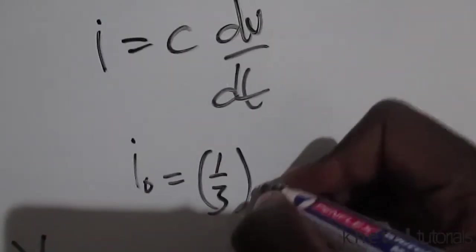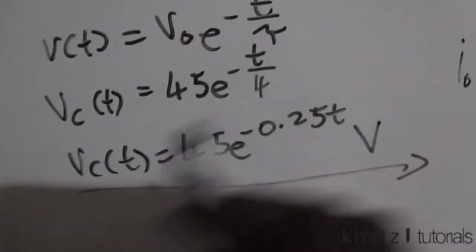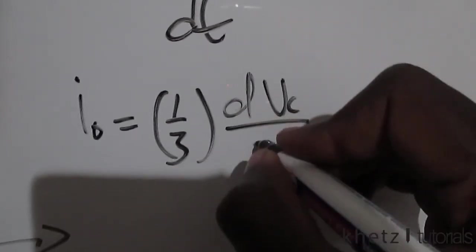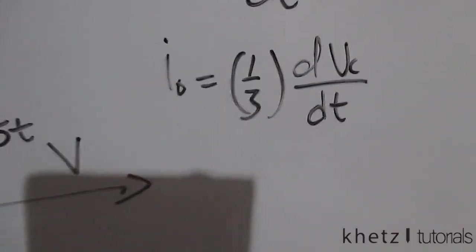io equals C which is 1/3, then derive or differentiate this formula. It's going to be d Vc divided by dt.